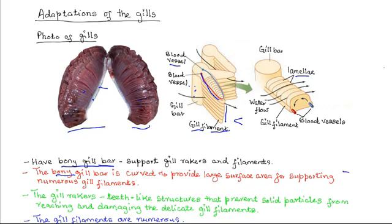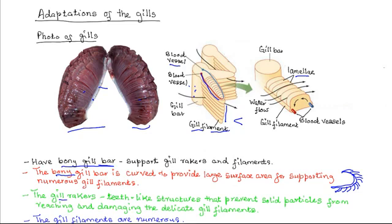The gill bar is not straight — it is actually curved. In this structure it is able to support many more gill filaments than would otherwise be the case if the gill bar were straight. The presence of gill rakers prevents damage to the filaments, so that as water is drawn from the mouth into the pharynx, any solid particles are screened out by the gill rakers.